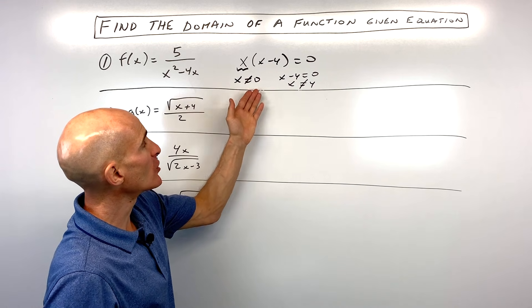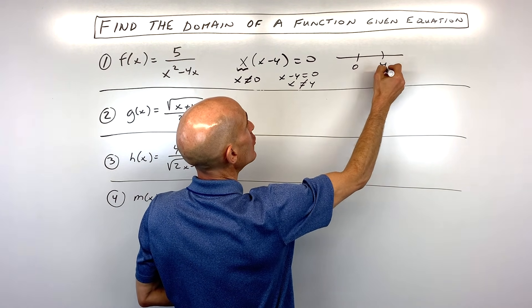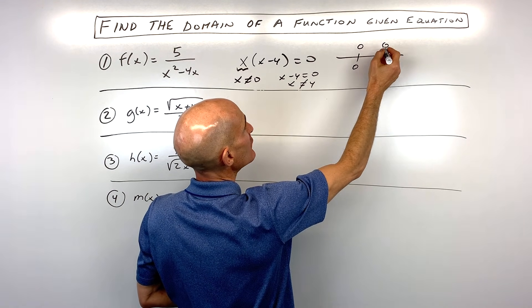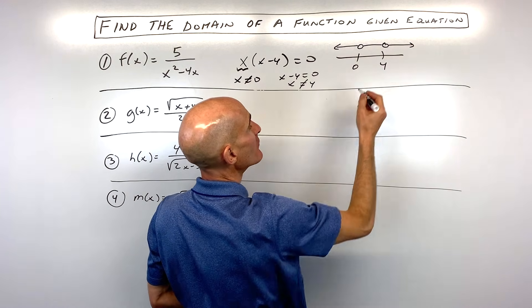So the next thing I want to do is I want to go to the number line, and I'm going to just plot these from lowest to highest. So we can see that x cannot be zero, it cannot be four, but it can be all of these numbers, all of these numbers, and all of these values.